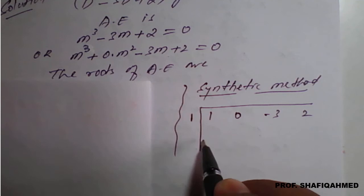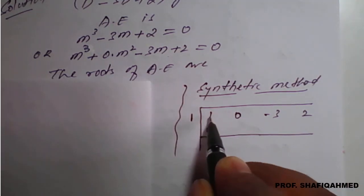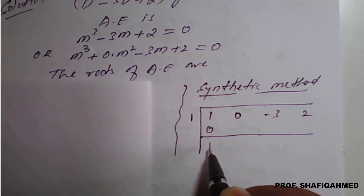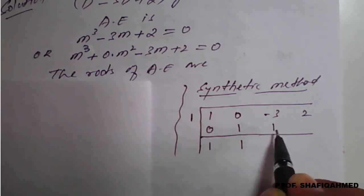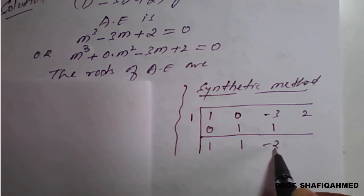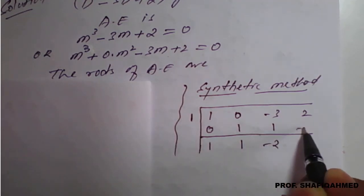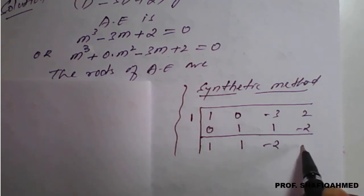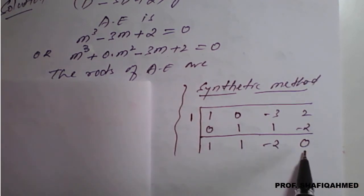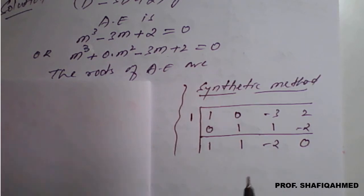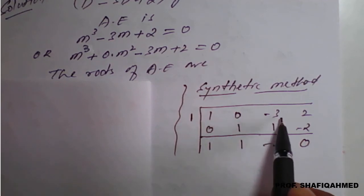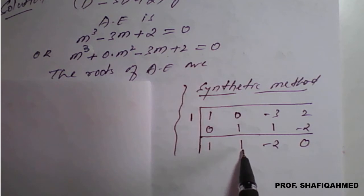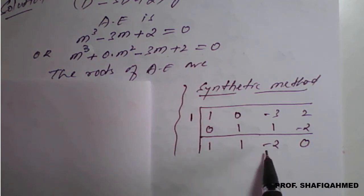Put a line and write the coefficients. Bring down 1. Then 1×1 = 1; 0 + 1 = 1. Then 1×1 = 1; -3 + 1 = -2. Then -2×1 = -2; 2 + (-2) = 0. The remainder is 0, confirming m = 1 is a root. The cubic m³ + 0·m² - 3m + 2 is reduced to the quadratic m² + m - 2.